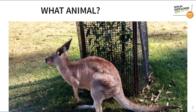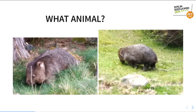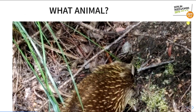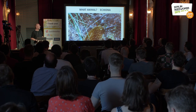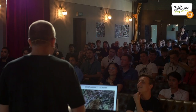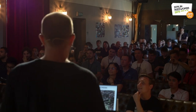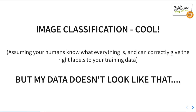Let's generalise — what kind of animal is this one? A kangaroo. This one is a wombat. But if you're not careful, your AI will say that's a dog because, you know, four legs, low to the ground. And this one is an echidna. So if you're getting a load of humans to classify your images and they don't know what's in the image, they can't give you the training data that your AI is going to need. Image classification is pretty cool as long as your humans are able to give you the right training data.